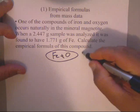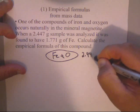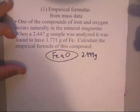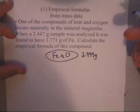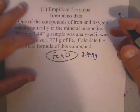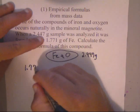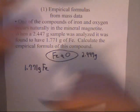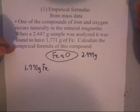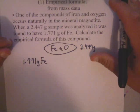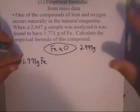And they tell us that the sample that we have is 2.447 grams in size. And they tell us that they analyzed it and they found out that it had 1.771 grams of iron. And they want us to see if we can determine the empirical formula from this.